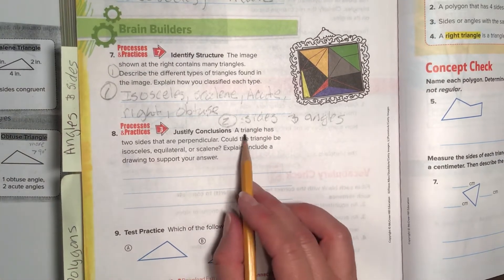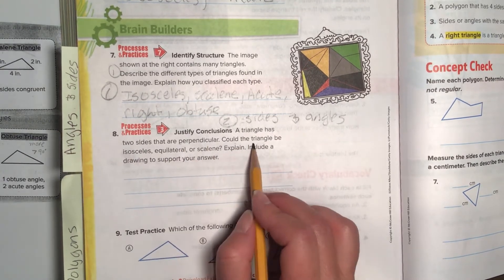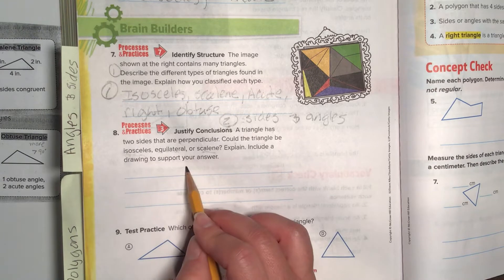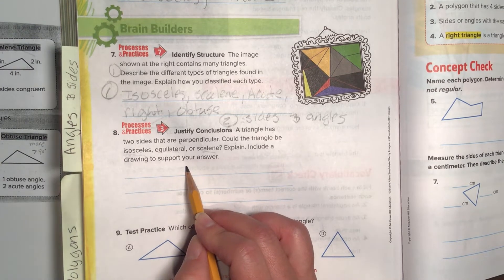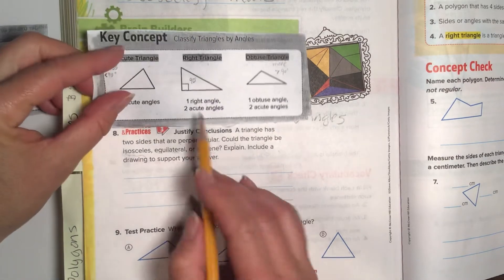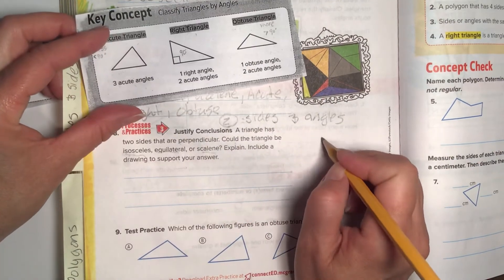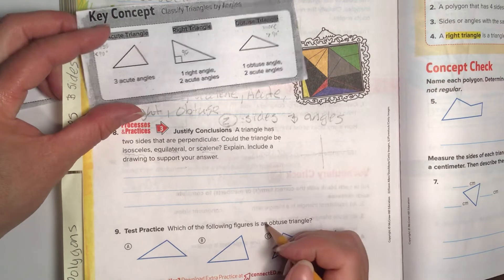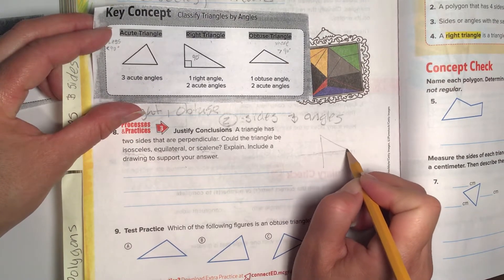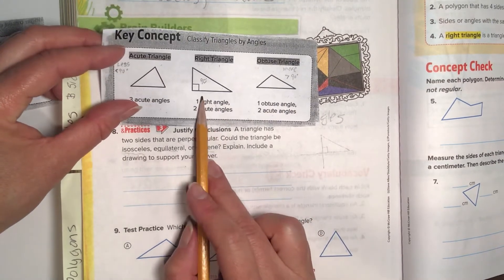Number eight. Justify conclusion. A triangle has two sides that are perpendicular. Could the triangle be isosceles, equilateral, or scalene? Explain. Include a drawing to support your answer. If the sides are perpendicular, let's look at this for a second. Perpendicular means they intersect. If the sides are perpendicular, which means we could draw a plus sign. That's perpendicular.